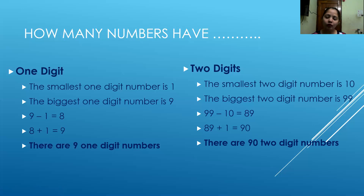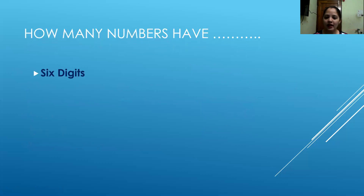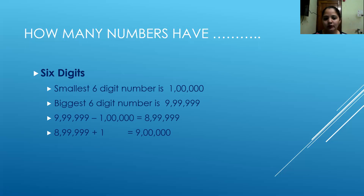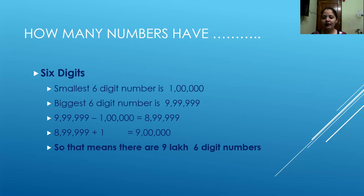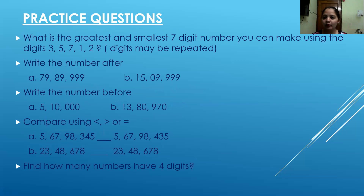Again one example for a bigger number. How many numbers have six digits? You have to find how many numbers in the counting have six digits. The steps are the same — find the smallest six digit number and the biggest six digit number. Subtract both numbers to get 8,99,999, then add one to get 9,00,000. So there are 9,00,000 six-digit numbers in the counting. You can also find how many 4-digit, 5-digit, or 6-digit numbers there are using the same method — these are your practice questions.